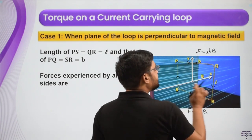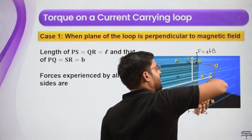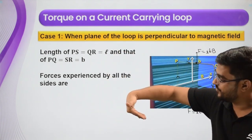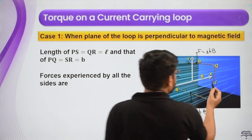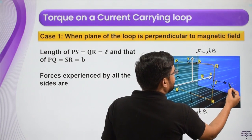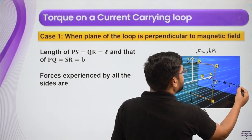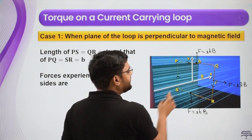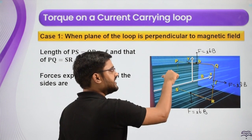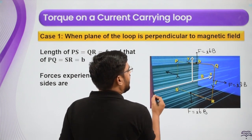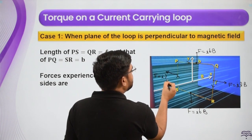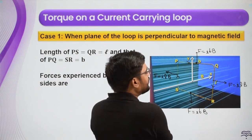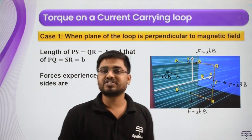Now for segment QR: L is downward and B is this way, so doing L cross B gives a force out of the screen with magnitude ILB. For segment PS, the direction of current is the other way, so L cross B is into the plane of the paper, again with magnitude ILB, since the length is L for this section as well.